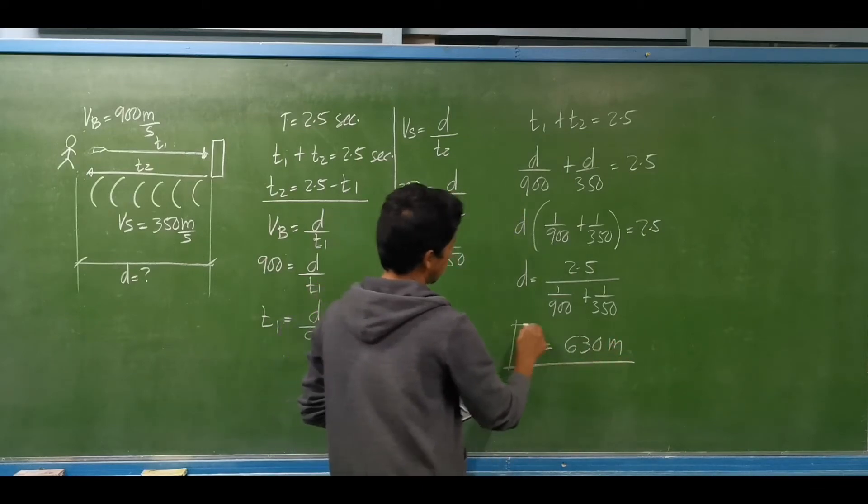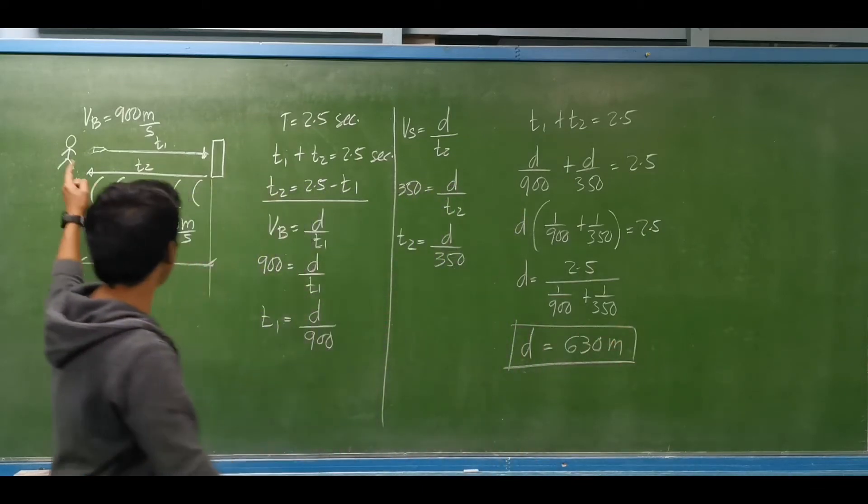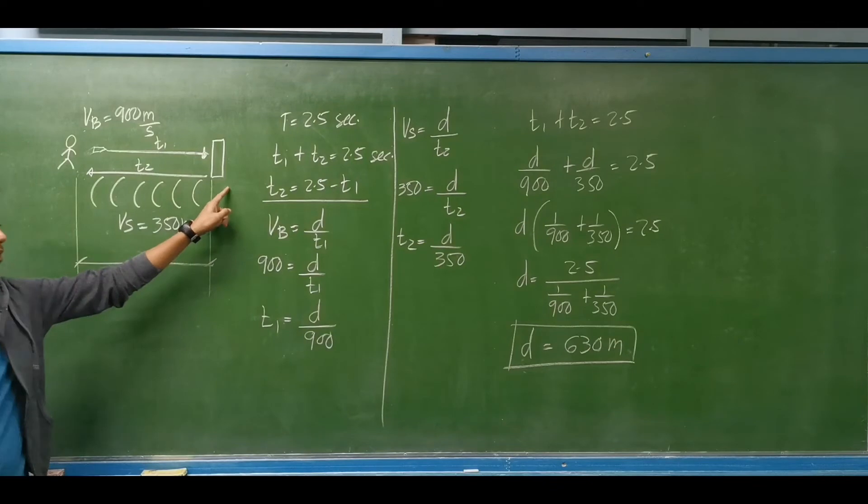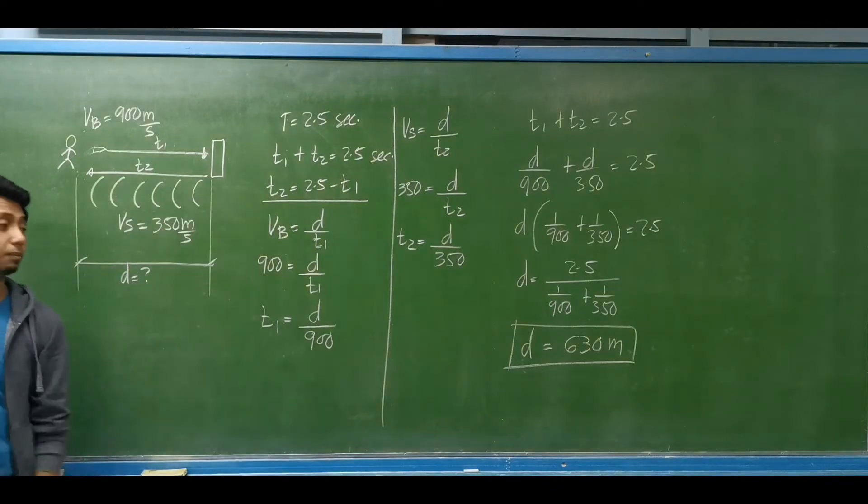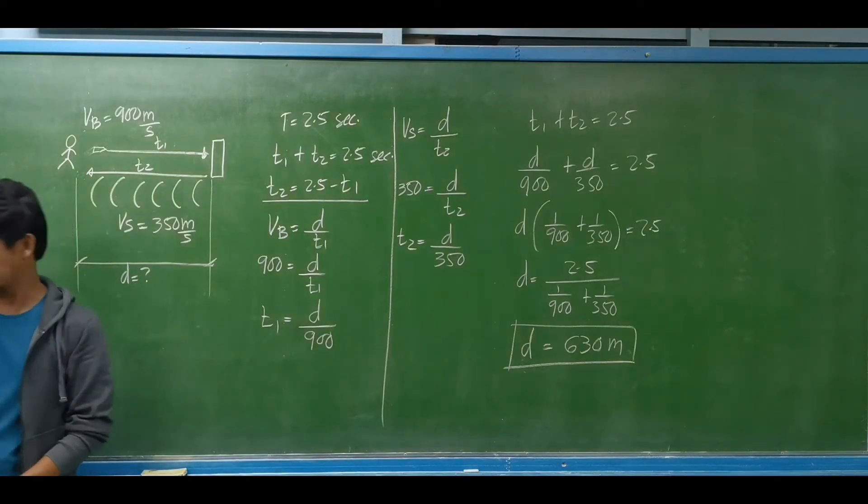So the distance from the man to the target is 630 meters, and that will be our answer.